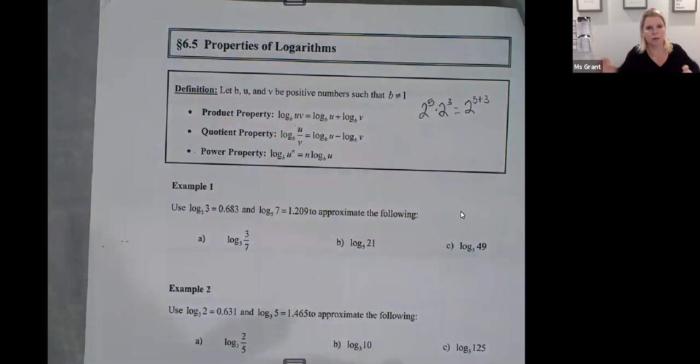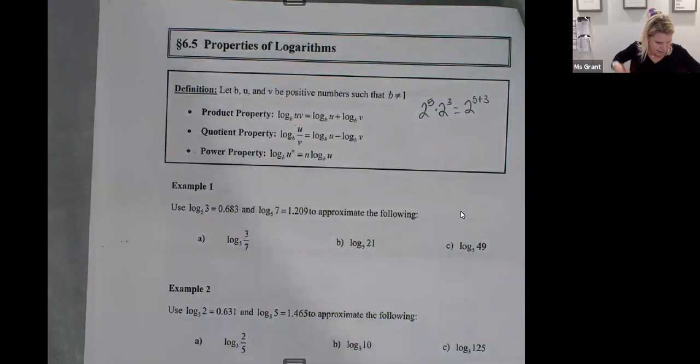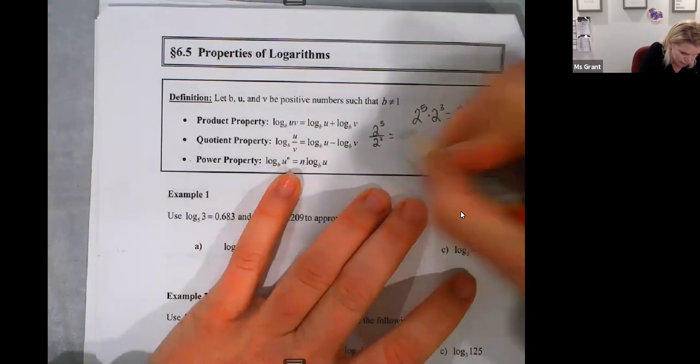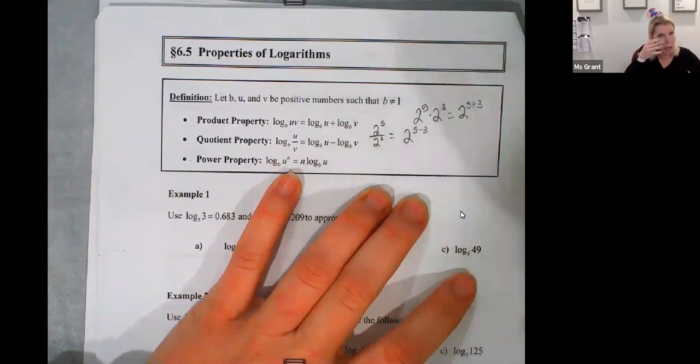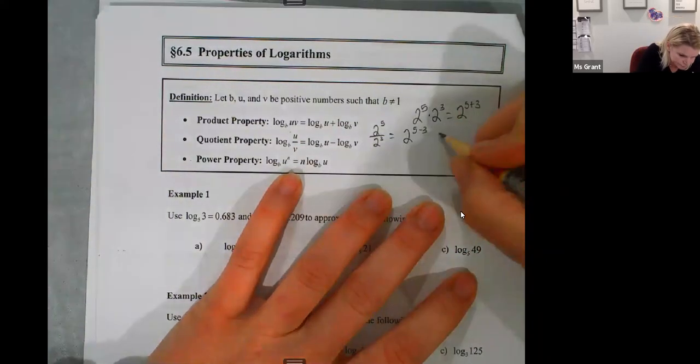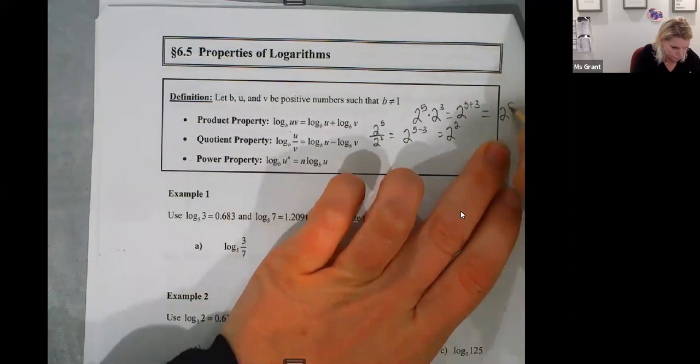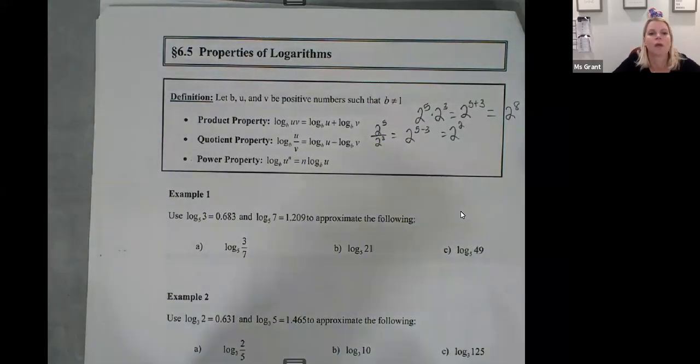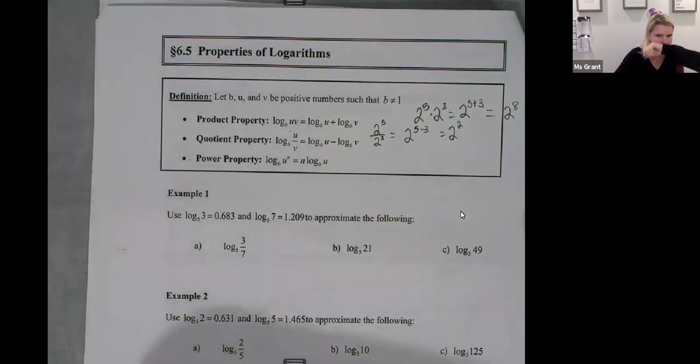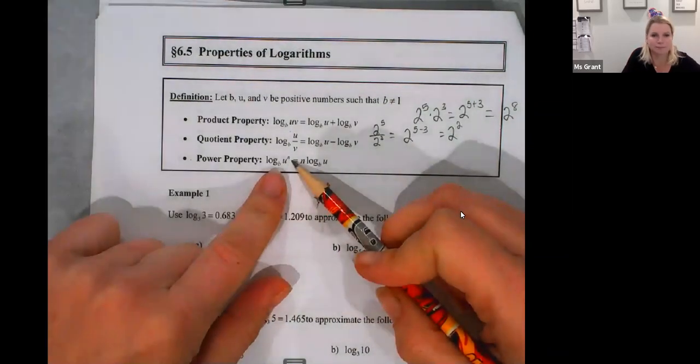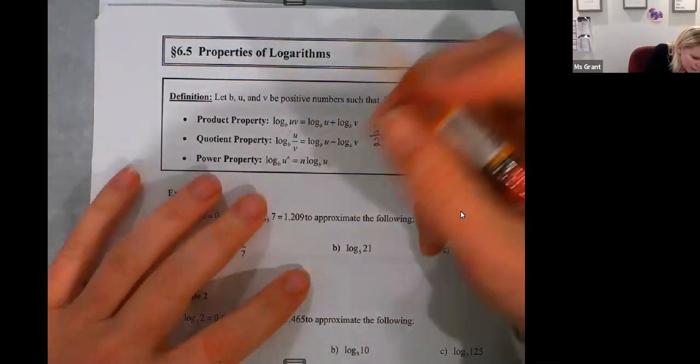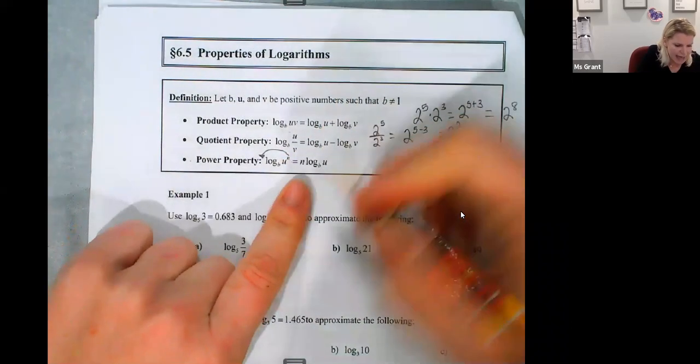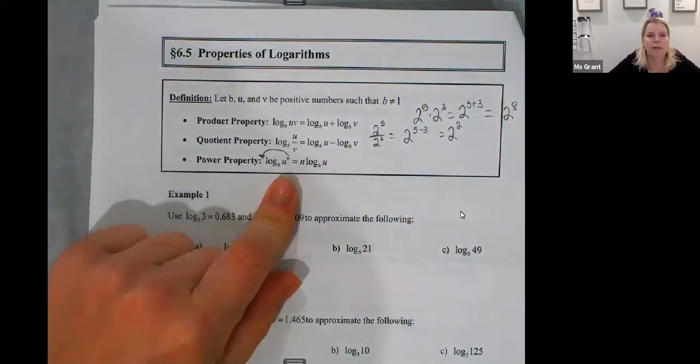The quotient property, which you've seen as like, I can just do them all with the 2 to the 5 over 2 to the 3. I subtract 2 to the 5 minus 3, and so that's going to be 2 squared. So division sign, I subtract. Power property: u raised to the n power. The n, the exponent gets multiplied, but we move it to the front. So it's n, the exponent goes first, the exponent times log base b of u.